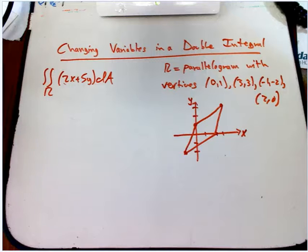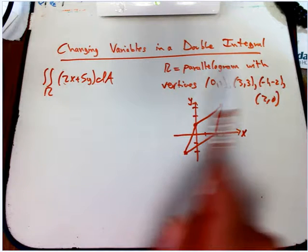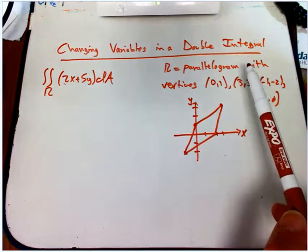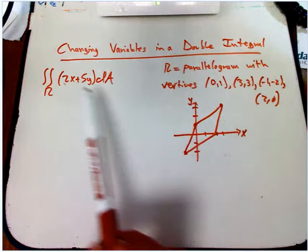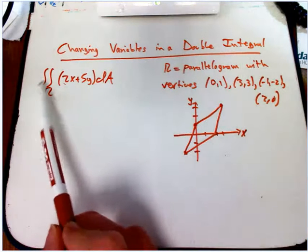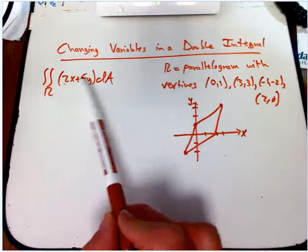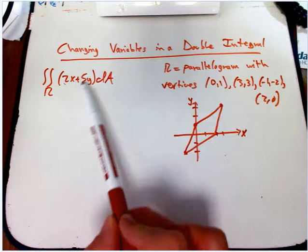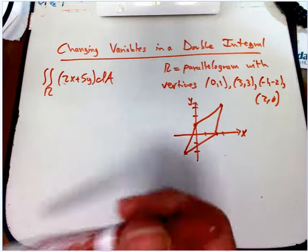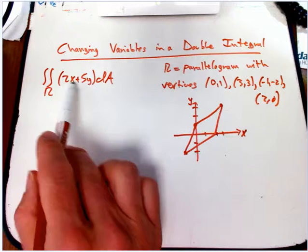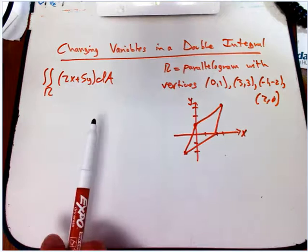We're going to look at changing variables in a double integral. It's going to be a fairly substantial video because there's a lot to discuss here. We've got an integral over a region of a function in the plane, and the function, for simplicity, it's going to be just a linear function. In general, that could be something complicated, and the reason we're changing variables might be to simplify that. In this case, that's not really why.